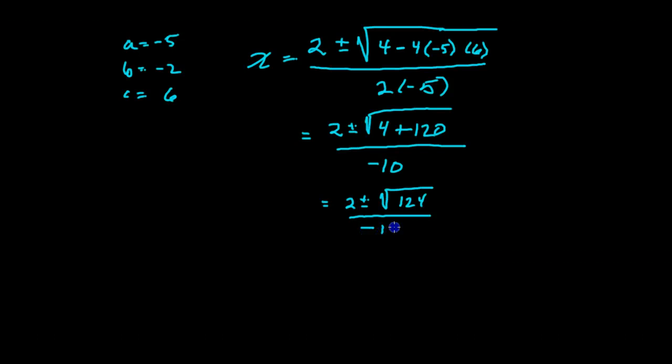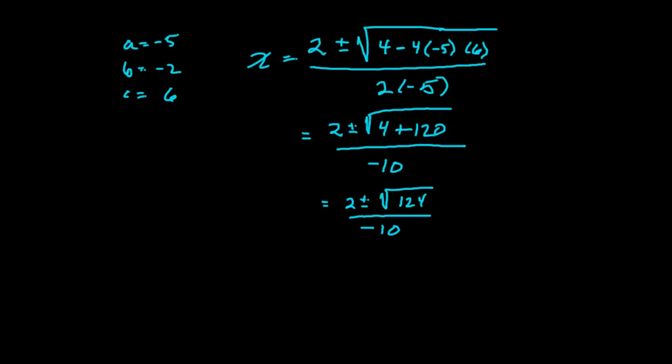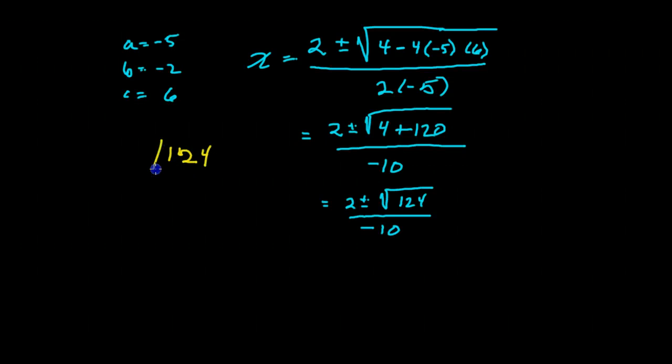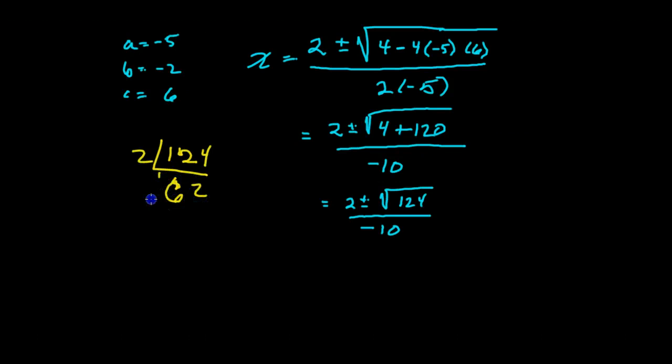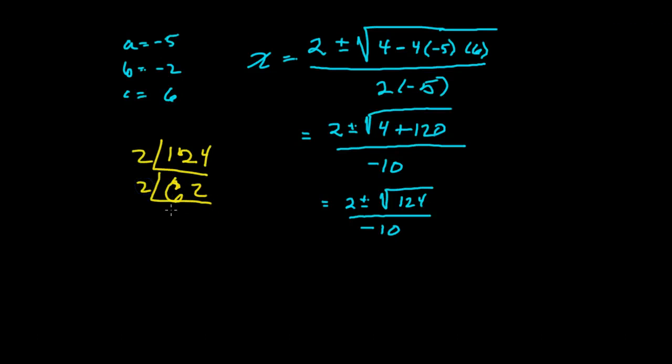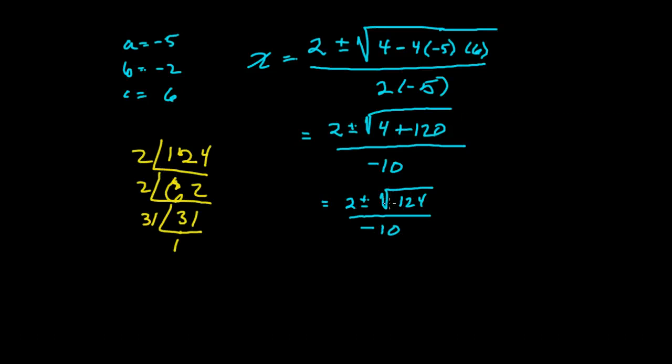Because that's 4 plus 120. Now, I need to find out if 124 is factorable. Are there any square roots in 124? So let's do it by prime factoring. So that'll be 62. Divide 62 by 2, and that'll give me 31, and 31 is prime.